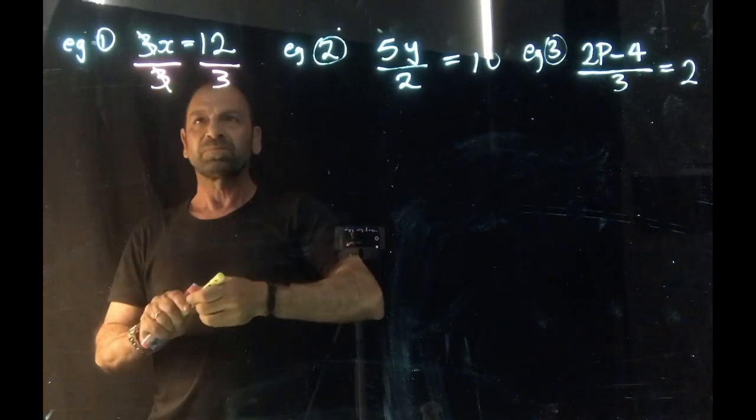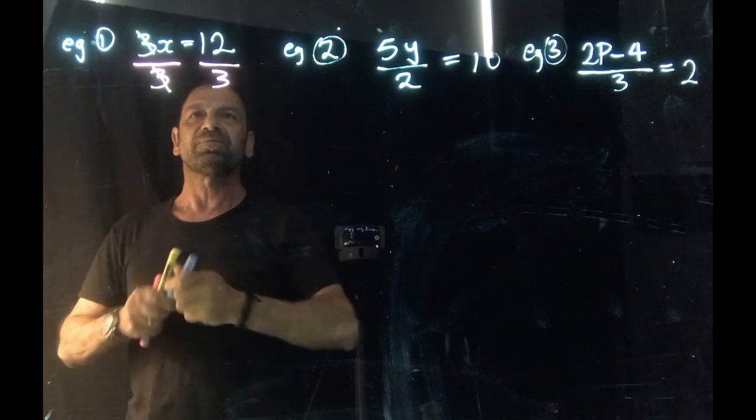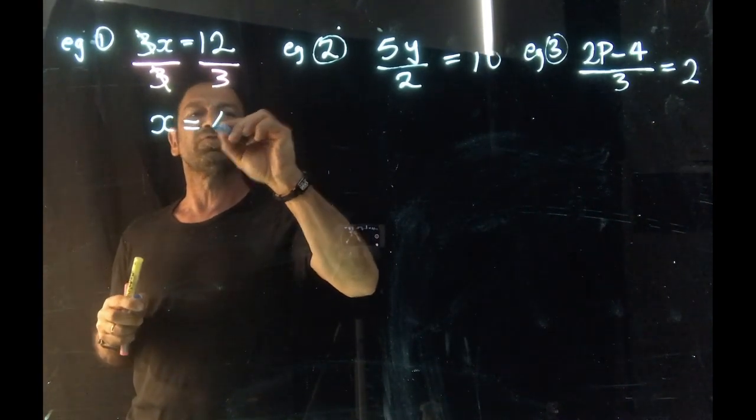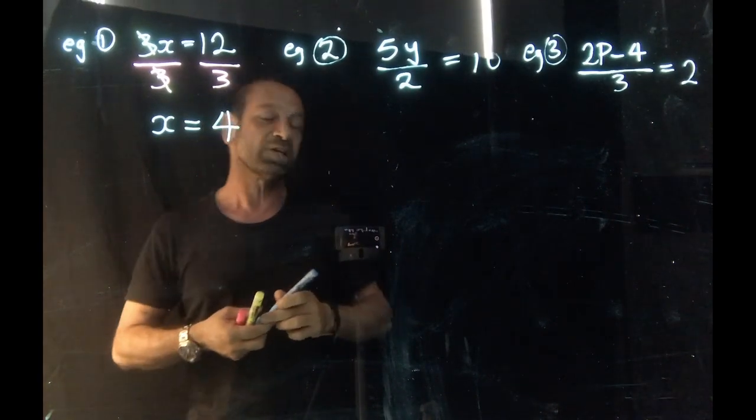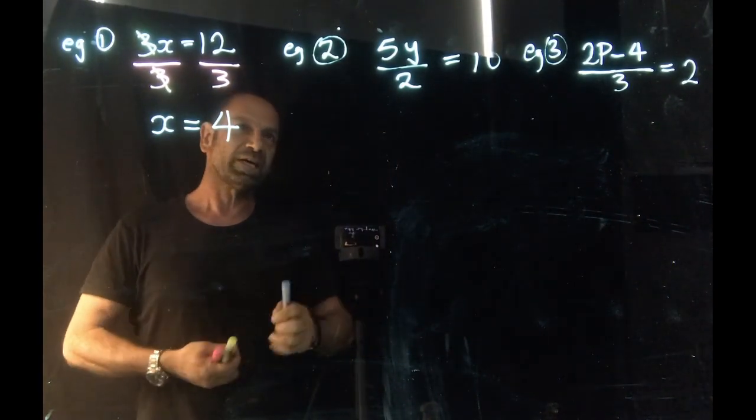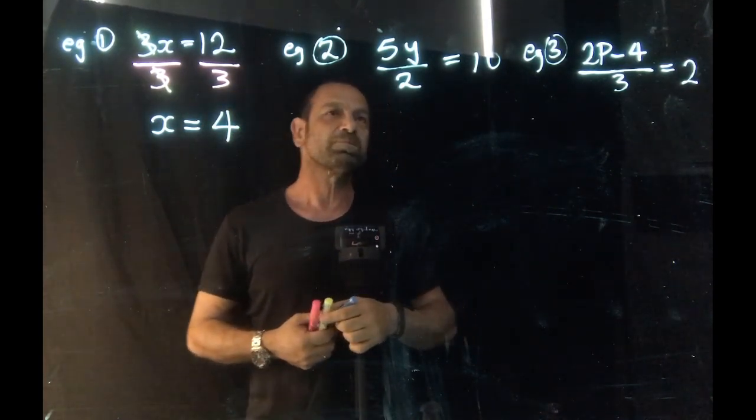Leaving us x equal to 4. So this was a single step equation, fairly simplistic in nature. So moving on to the second example.